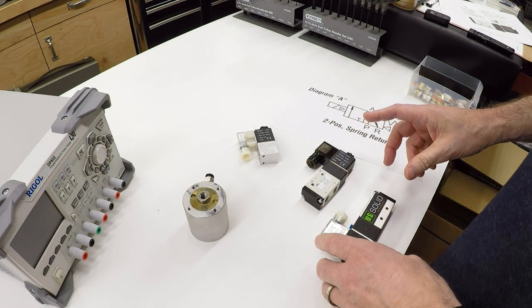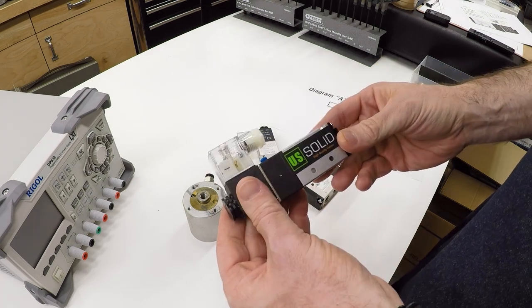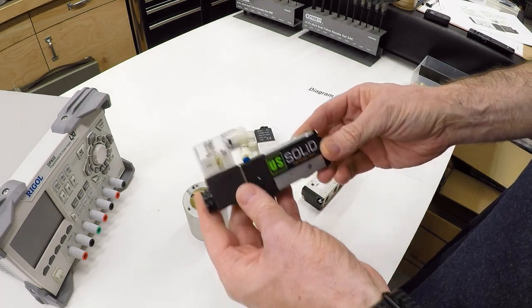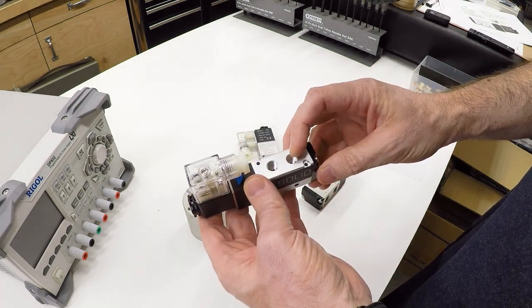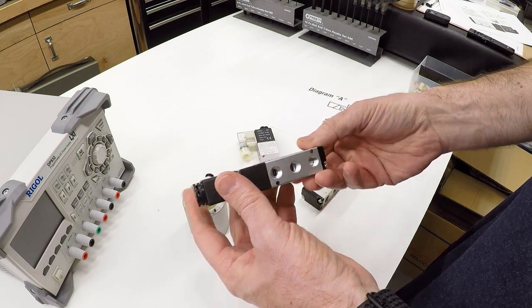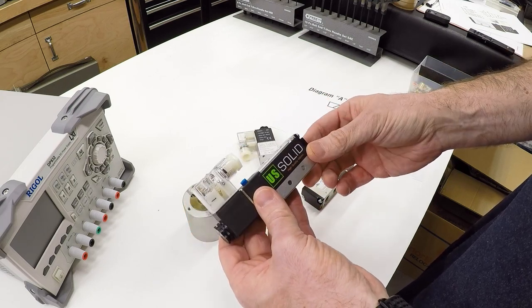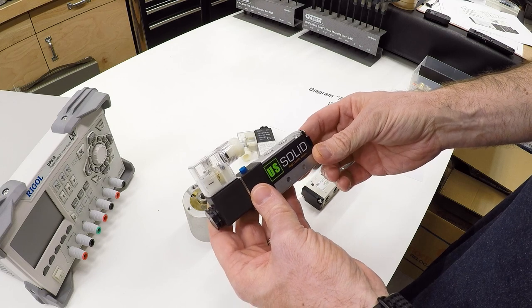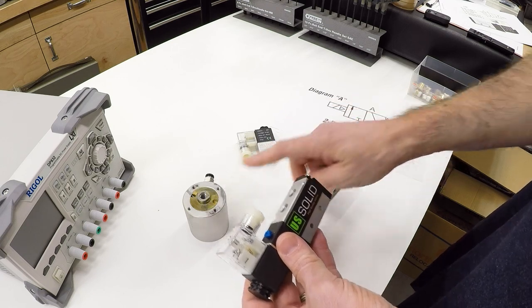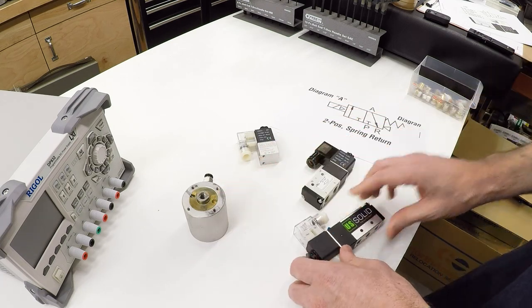The third type of valve that you're probably going to come across is what's called a 5-2 valve. This has five ports, one, two, three, four, five. And it has two positions, just like the other valves that we've looked at. This is designed specifically for running a double-acting cylinder.